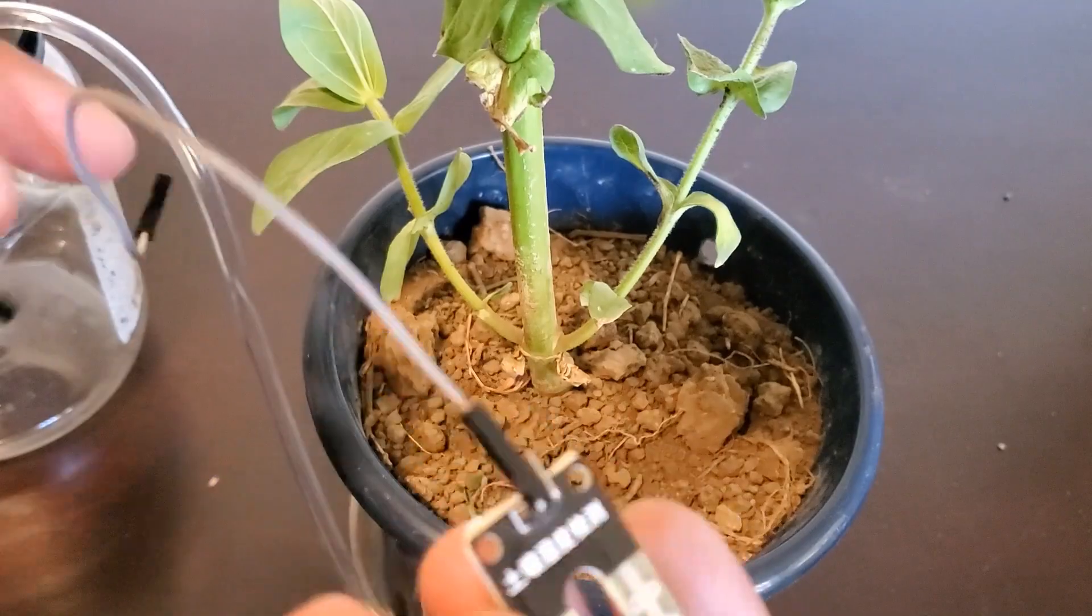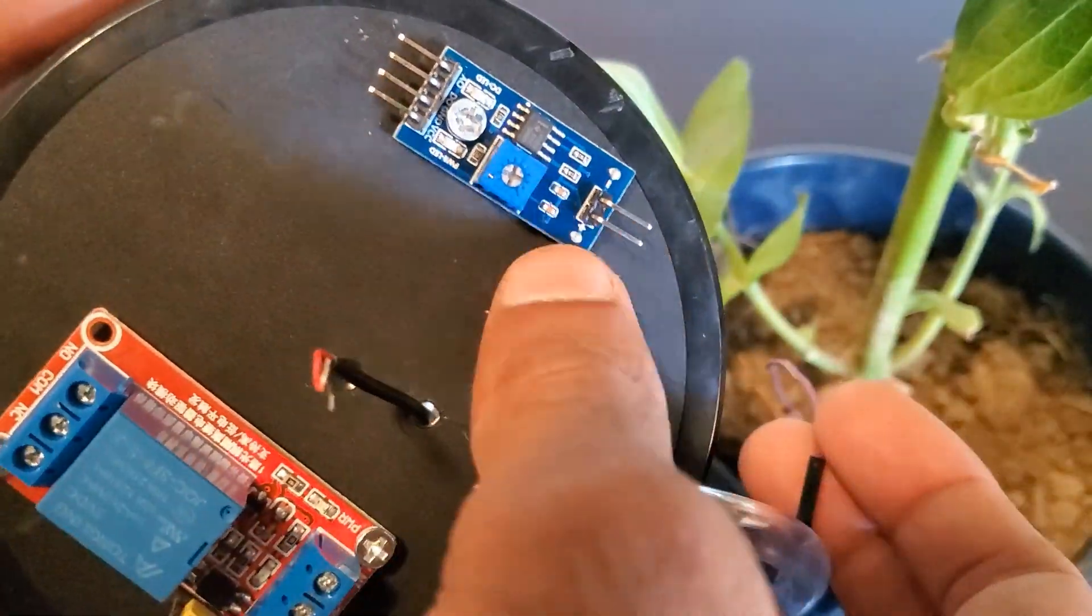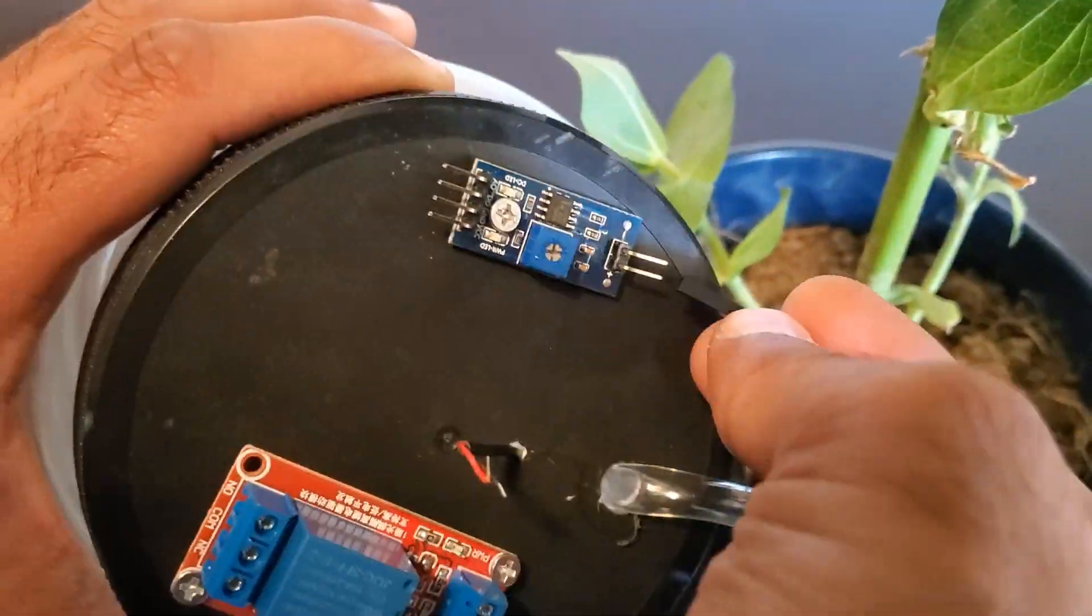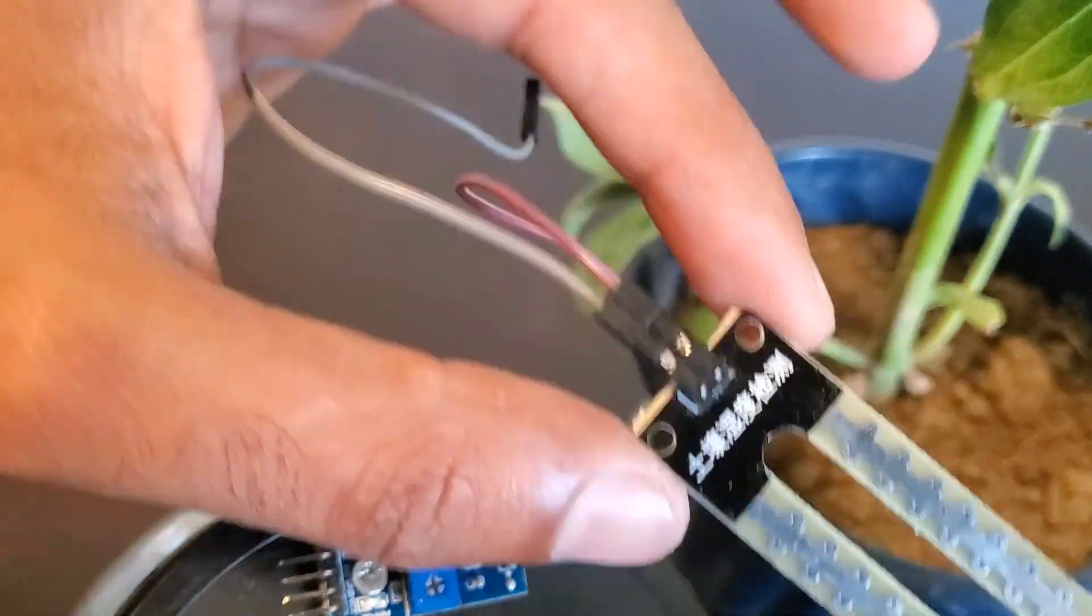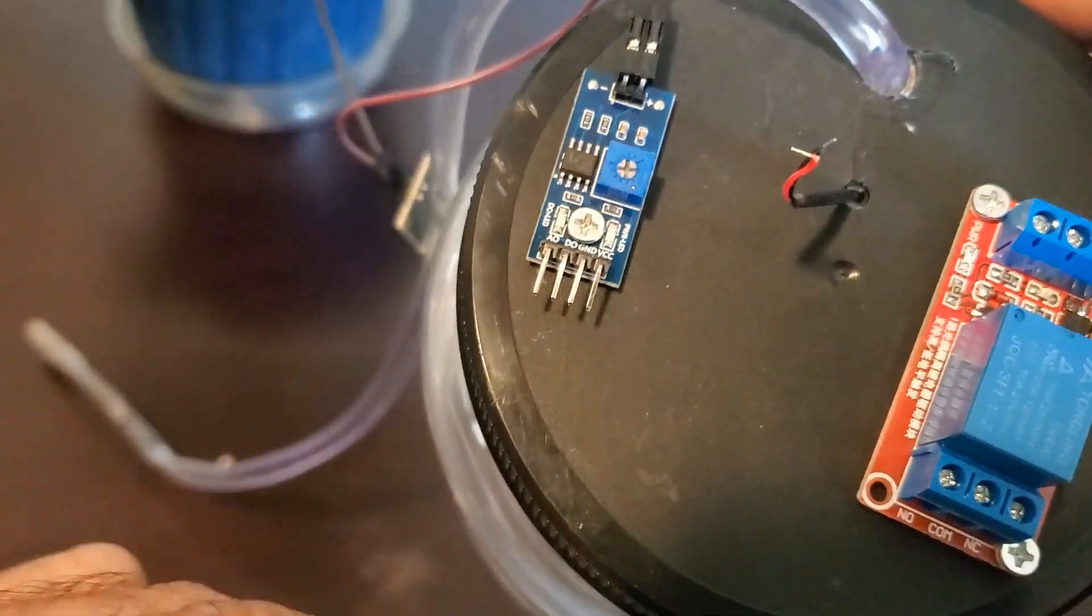To begin the wiring, attach one end of the female jumper to the positive side of the sensor head while attaching the other end to the positive side of the PCB and do the same for the negative.